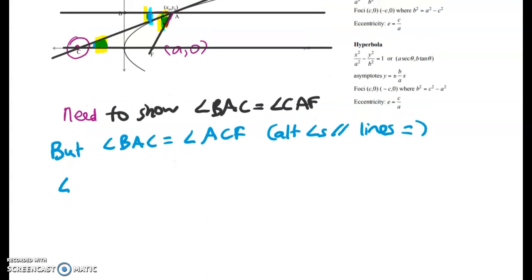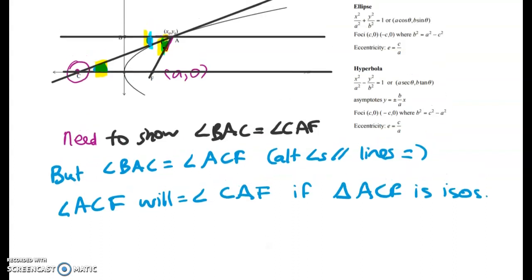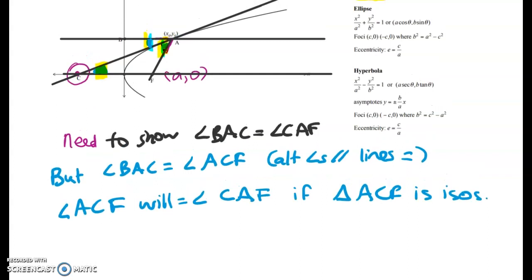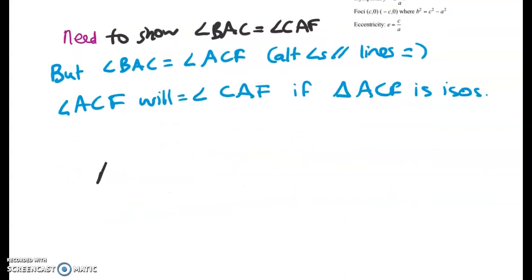So angle ACF will equal angle CAF if the triangle ACF is isosceles, because then I'll have the base angles of the triangle being equal. So what we've got to do now is we have to show that two side lengths are equal. We want to show that this side length and this side length are equal. Now they're not drawn to look particularly equal, but it turns out we can prove that they are. The diagrams are never to scale. What do I need to do? Well, I need to find the coordinates of those points. I've got the coordinates of the focus and I've nearly got the coordinates of point A.